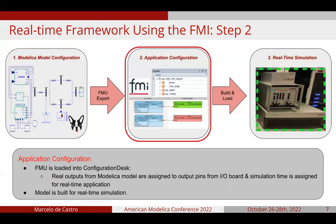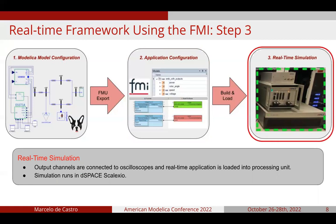In step two, the FMU model exported using Dymola is loaded into Configuration Desk. The real outputs are assigned to output pins from the IO board, and the model is assigned to a real-time processing unit and built for the real-time simulation. The final step is the loading of the model in a real-time application. We use oscilloscopes to read the IO board's outputs and simulate the model using dSPACE SCALEXIO.